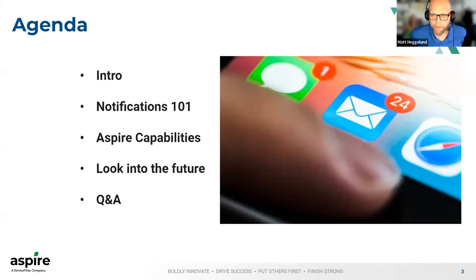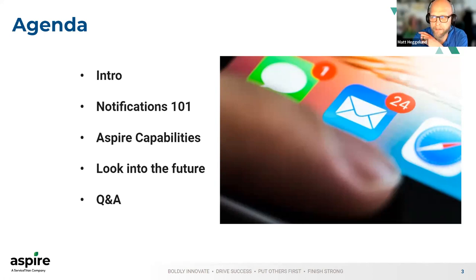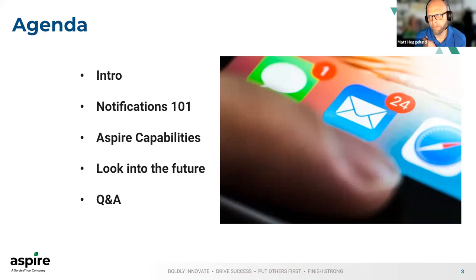We're going to do a quick intro between myself and John, and then we'll actually dig into notifications — just kind of what they are, differences out there, different use cases you might see in other verticals outside of landscaping, and some compliance and regulation stuff you want to be aware of as you roll out notifications to improve your customer experience. Then we'll dig into Aspire capabilities with John, go through some pseudo demos of opt-in workflows and potential around different templates and messaging tokens. At the end, we'll take a look into the future and then end with Q&A.